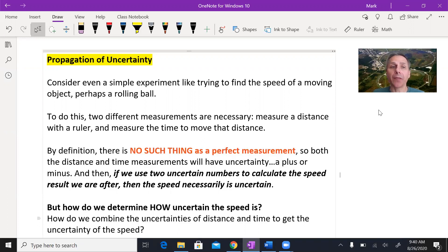How do you figure out what the uncertainty is, what that plus or minus is, on the result? How well will we know the speed? Knowing that there's no such thing as a perfect measurement.